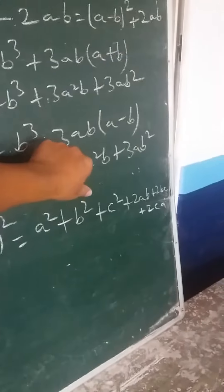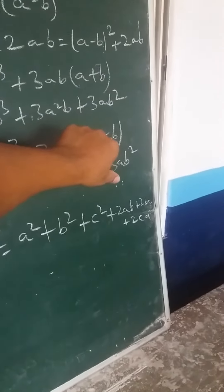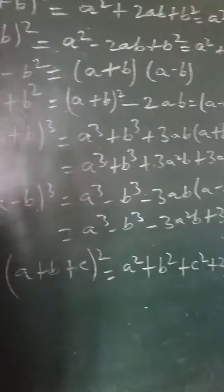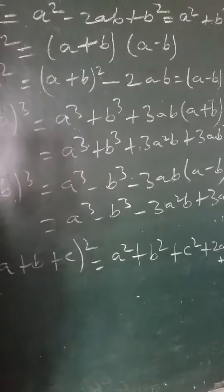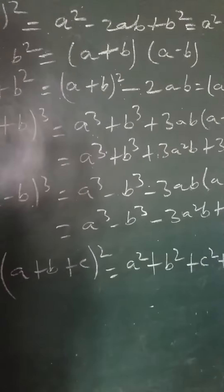(a + b + c) whole square equals a square plus b square plus c square plus 2ab plus 2bc plus 2ca. If you like it, then like, subscribe, and share. Thank you.